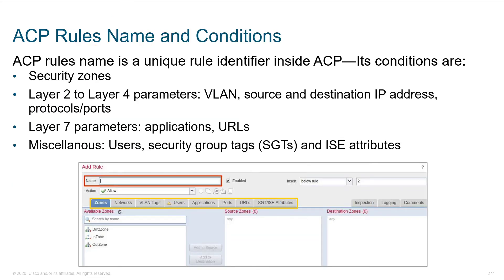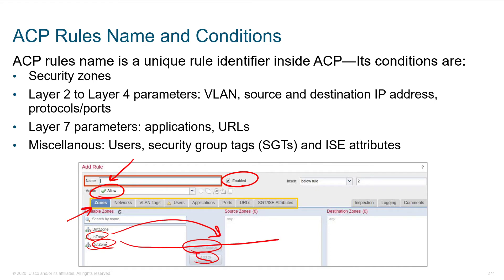To add a new rule in the ACP, give the rule a name and then give it an action. If you're testing and want to toggle it, there's an Enabled tab. When building rules, you can base conditions on security zones — like from inside to out — and select those zones to add as source or destination. You can also use networks, VLAN tags, users, applications, ports, URLs, and security group tags.